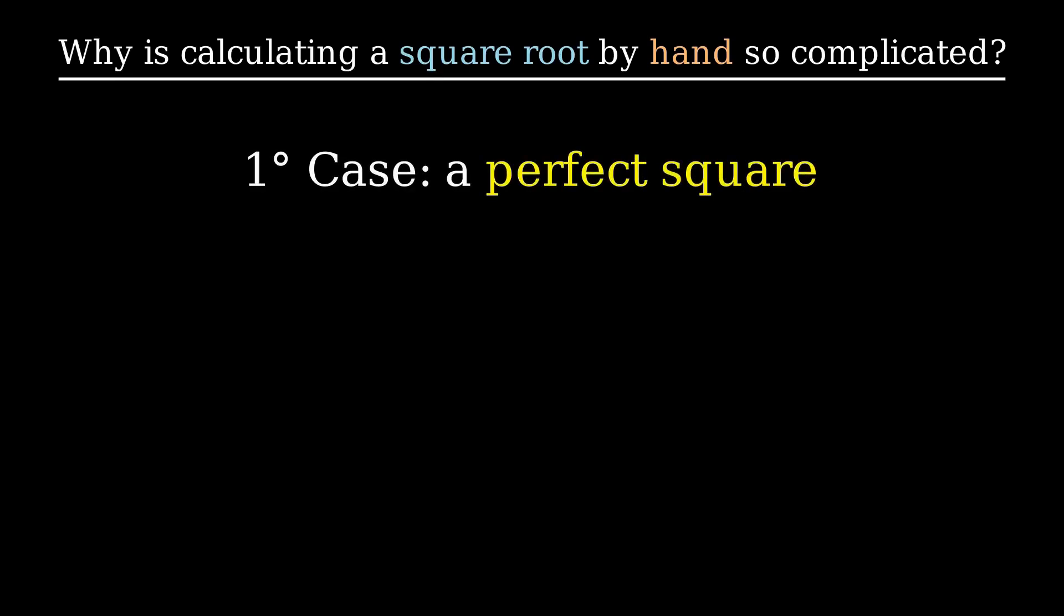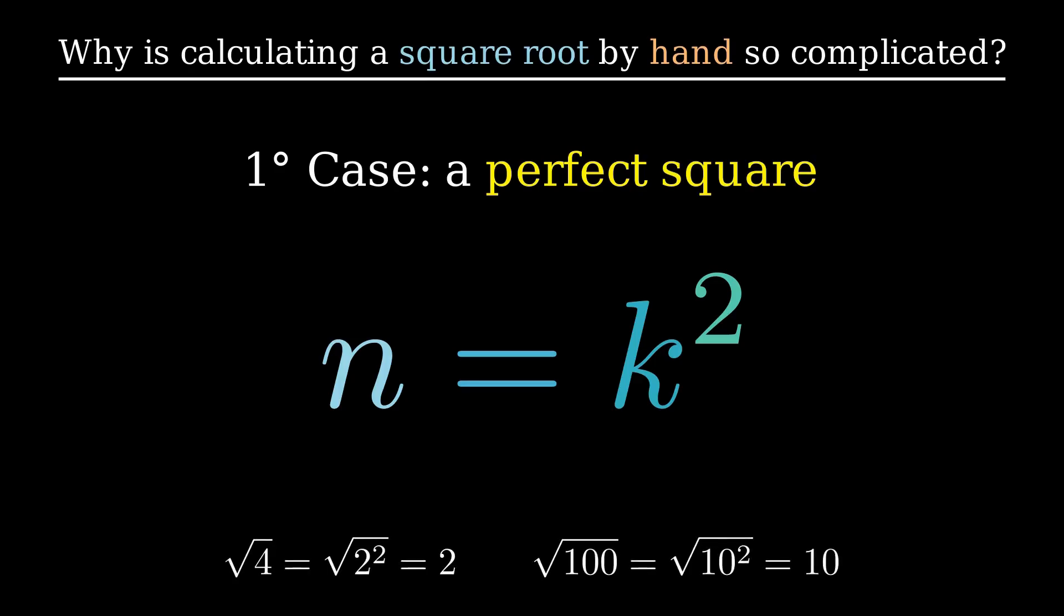We distinguish two cases. This is easy. These are numbers that can be written as k squared for some integer k. For example, the square root of 4 is 2. The square root of 100 is 10.